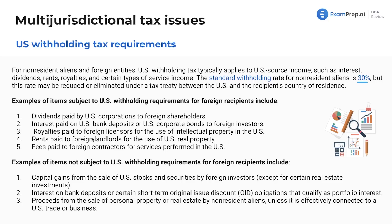Just be familiar with these — nothing wild you have to memorize. Rents paid to foreign landlords for the use of U.S. real property, and fees paid to foreign contractors who perform services in the U.S. Items not subject to U.S. withholding requirements for foreign recipients include capital gains from the sale of U.S. stocks and foreign securities by foreign investors, interest on bank deposits or certain short-term original issue discount obligations that qualify as portfolio interests, and proceeds from the sale of personal property or real estate by non-resident aliens, unless it's effectively connected to a U.S. trade or business.